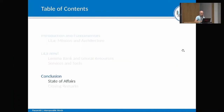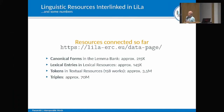The current state of the LILA Lemma Bank: the lemma bank counts around 215,000 lemmas overall. The lexical resources linked to LILA count around 145,000 entries. The corpora contain 158 works from around 120 different authors, with around 3,500,000 occurrences. The overall RDF graph of LILA is approximately 70 million triples.